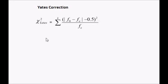Here is the formula for the Yates Correction. It is basically the Chi Square formula with the addition of this negative 0.5.